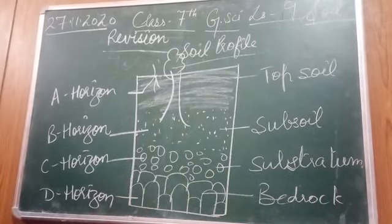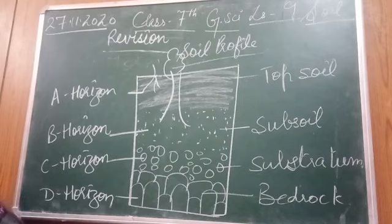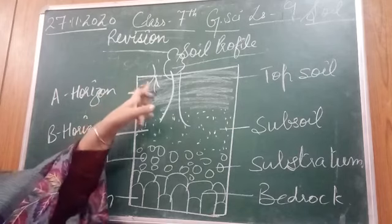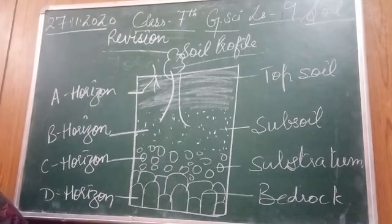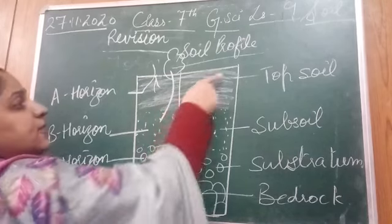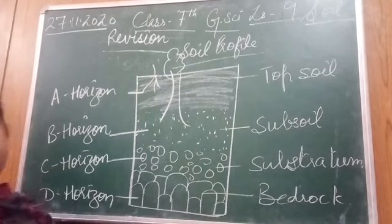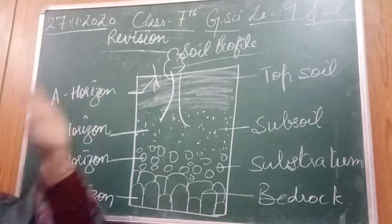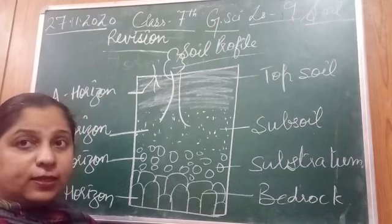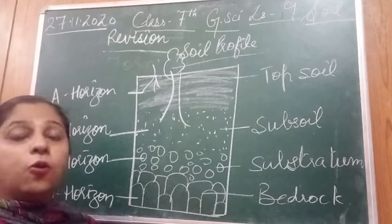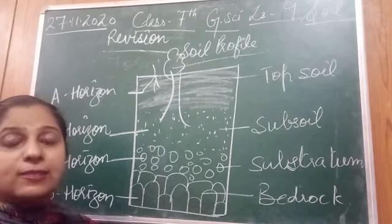Coming to the A horizon or topsoil — this is the topmost layer of the soil and the most fertile layer. Humus is present in large amounts in this layer, which makes the soil fertile. This layer is soft and retains much water. Above all, this layer provides shelter to many small organisms, so all the important activities are conducted here.